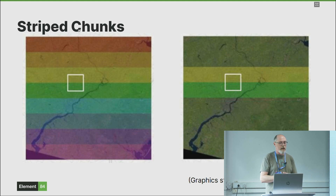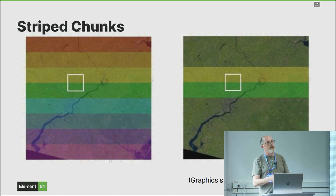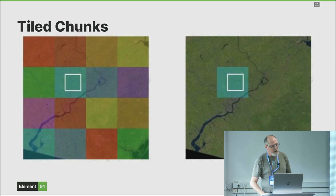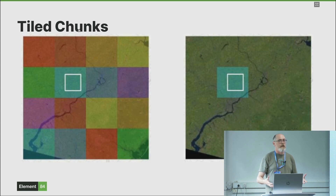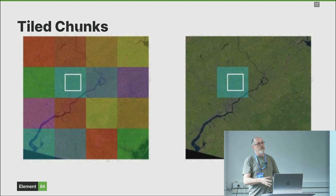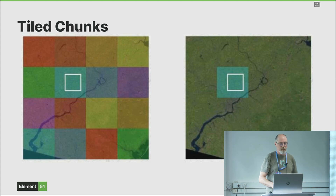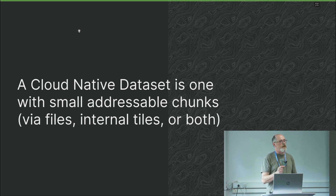To the left we see a standard TIFF file — by default things are in stripes, which is really inefficient because each stripe is compressed individually. You can't read just a few pixels out of a single stripe; you have to read the entire thing and decompress it, then pull out the pixels you want. For a given AOI you might have to read both stripes. The better way is internal tiling — tiles more closely aligned with your actual areas of interest, or with how you divide an image to process it with multiple workers. A cloud native dataset is really one with small addressable chunks — those could be files, internal tiles, or a combination.